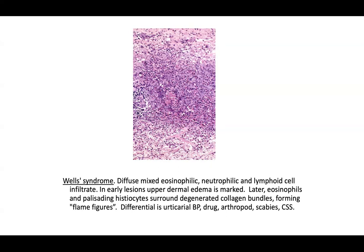Look at examples of flame figures in Elston and McKee and Weedon. Some believe Well syndrome is a non-specific reaction pattern seen in many inflammatory processes with abundant eosinophils. If you have a lot of eosinophils around that are degranulating, you can definitely get some flame figures. Figuring out the cause is the most important thing to treat the patient. Be familiar with Well syndrome as a diagnostic label given to a picture with abundant eosinophils that have degranulated and attached to collagen forming flame figures.